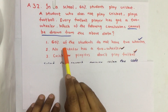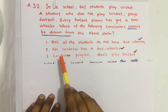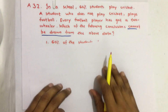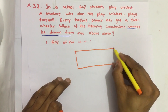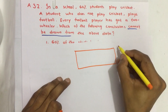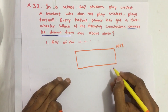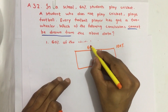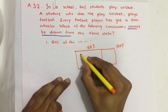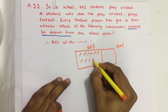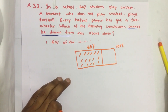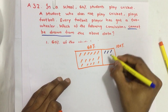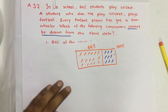Here we have three conclusions. The first is: 60% of the students do not have a two-wheeler. Suppose this is a school ground and 100% of students are gathered here. Out of all these students, 60% play cricket, and those who do not play cricket play football.